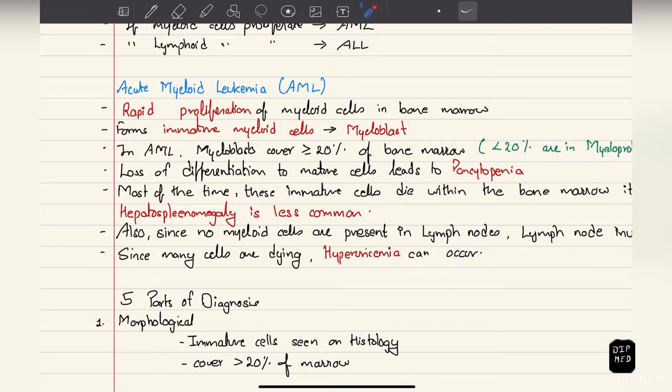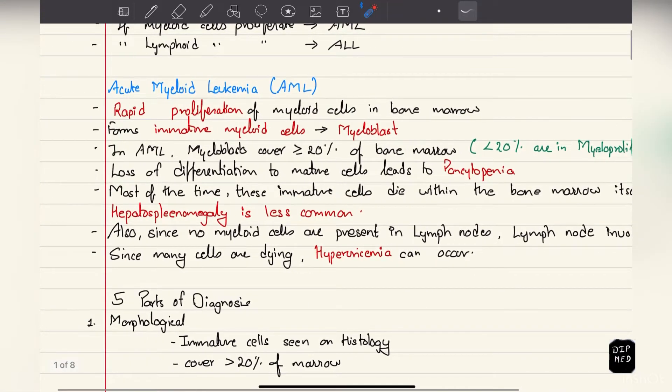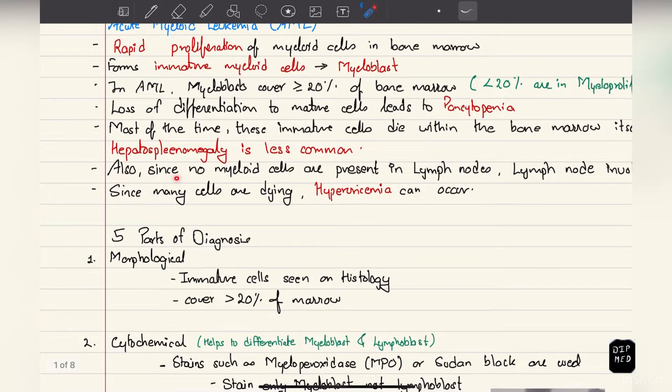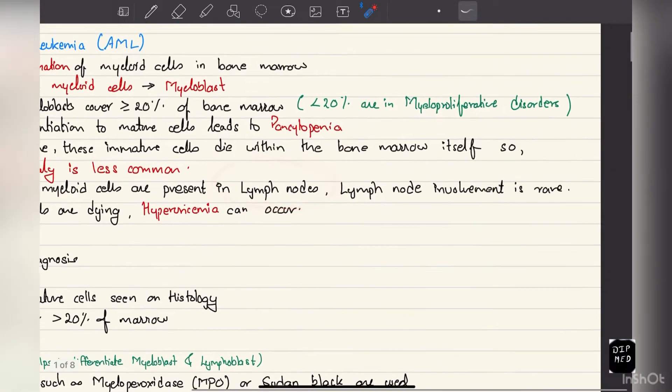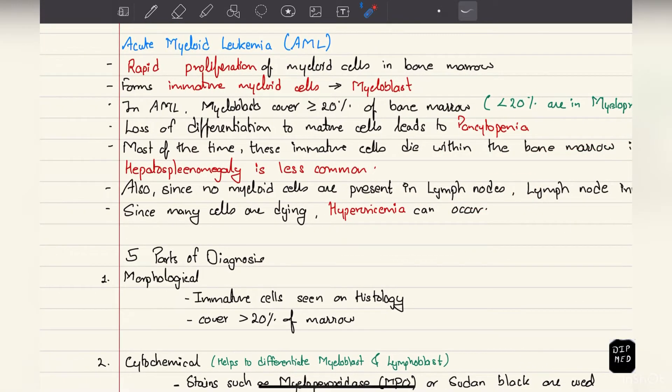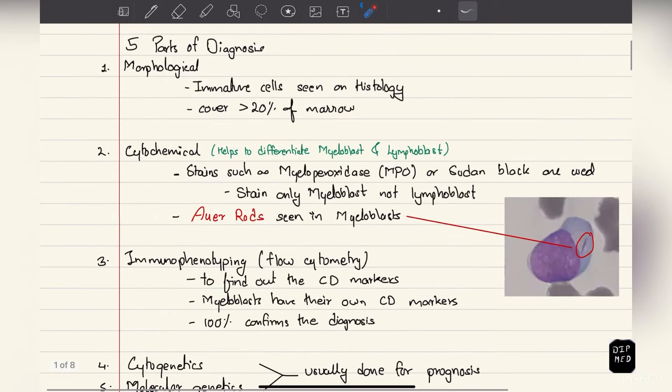In acute myeloid leukemia there is loss of differentiation of these immature myeloblasts to mature cells that leads to pancytopenia. Also, since these immature cells are growing at such a high rate inside the bone marrow, they suppress the growth of other normal cells which also causes pancytopenia. Most of the time these immature cells die within the bone marrow itself, so hepatosplenomegaly is less common in AML.